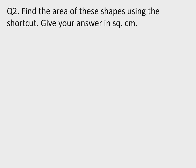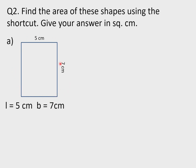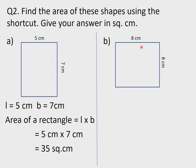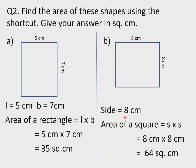Question 2: find the area of these shapes using the shortcut; give your answer in square centimeters. Question a: length = 5 cm, breadth = 7 cm — the shape is a rectangle. Area = 5 × 7 = 35 square cm. Question b: length = 8 cm and breadth = 8 cm — the shape is a square, so side = 8 cm. Area of square = side × side = 8 × 8 = 64 square cm.